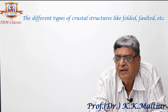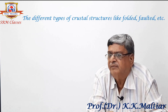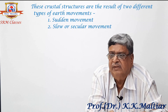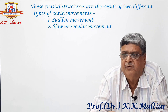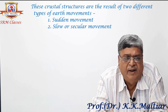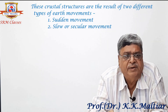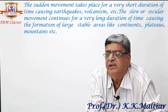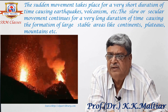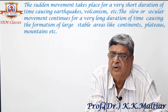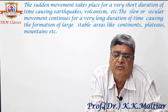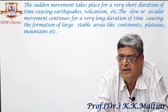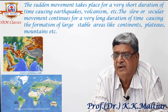The different types of crustal structures like folded, faulted, etc. are the result of two different types of earth movements. Number one is sudden movement, and number two is slow or secular movement. The sudden movement takes place for a very short duration of time, causing earthquakes, vulcanism, etc. The slow or secular movement continues for a very long duration of time, causing the formation of large stable areas like continents, plateaus, mountains, etc.